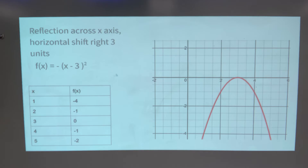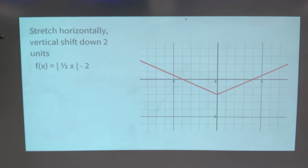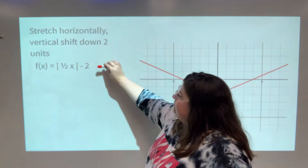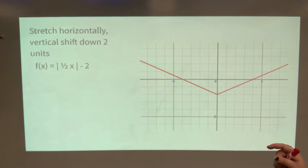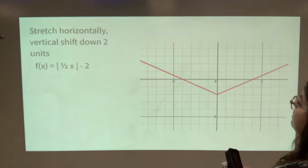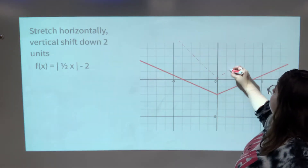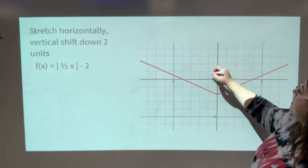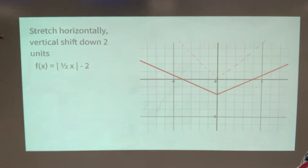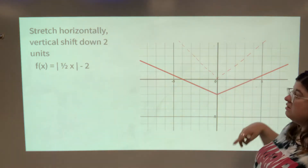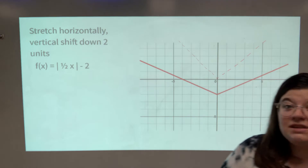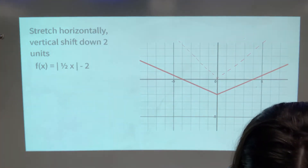Last example: the verbal description says stretch horizontally and vertical shift down two units. The equation is f(x) equals absolute value of one-half times x, minus two. The one-half on the inside produces a horizontal stretch, and the minus two on the outside is the vertical shift down. The parent function is absolute value — it got a bit wider (stretched horizontally) and moved down two units.